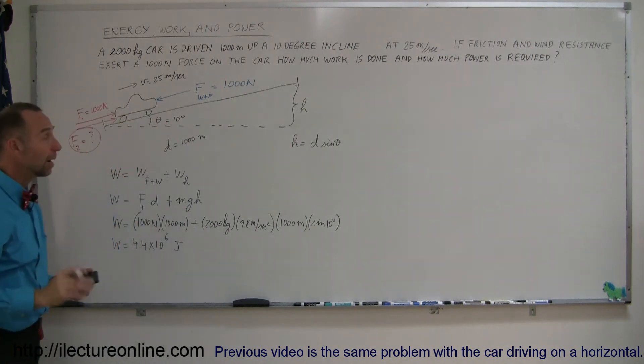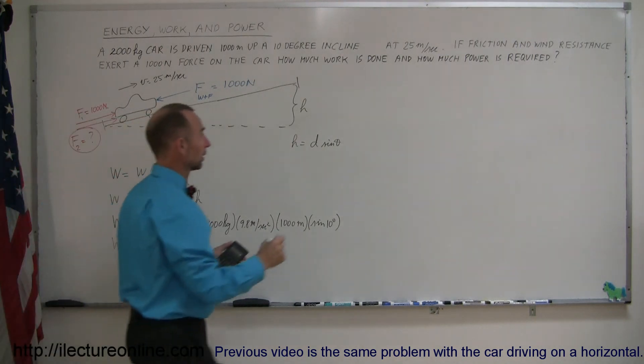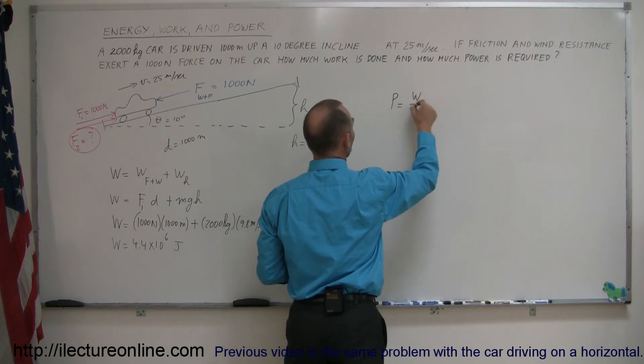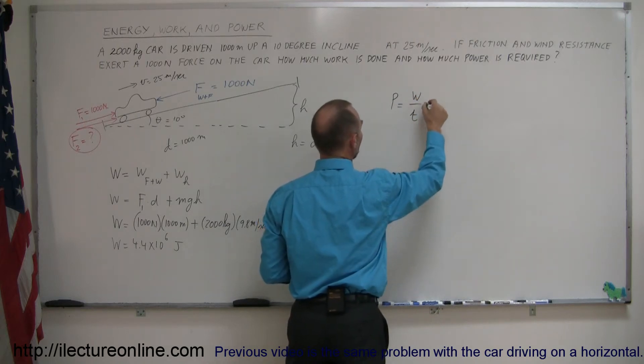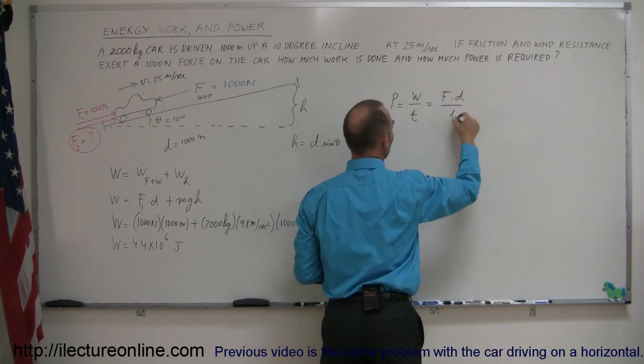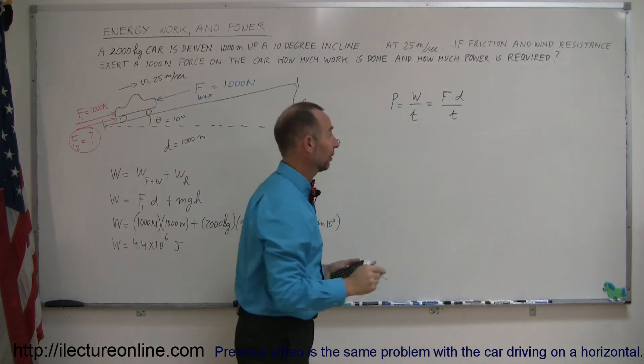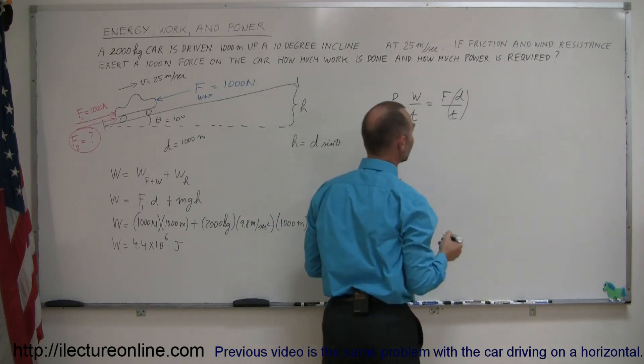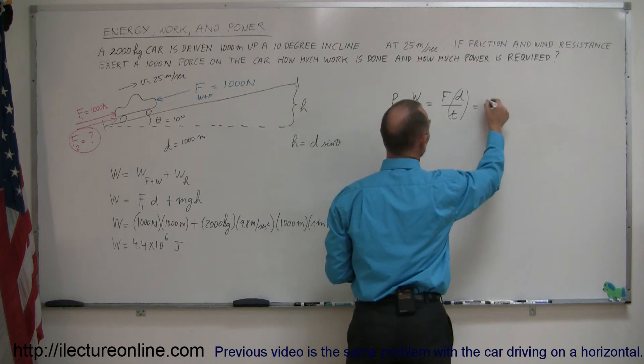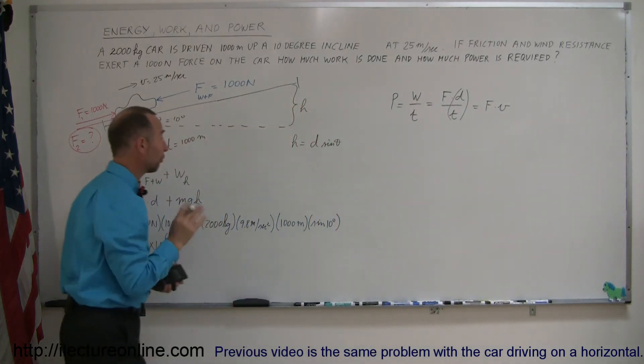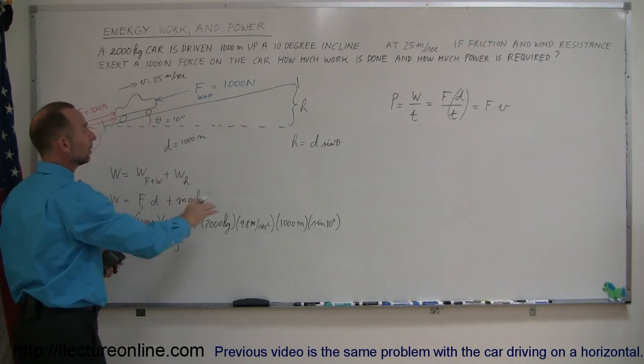Now, how much power is required? Power is equal to the work done divided by the time. And so, in this case, the work done is force times distance divided by the time. And if you look carefully here, distance divided by time, that's velocity. So, this is equal to force times velocity. So, to find the power, we simply have to multiply the force required to drive up the hill times the velocity.